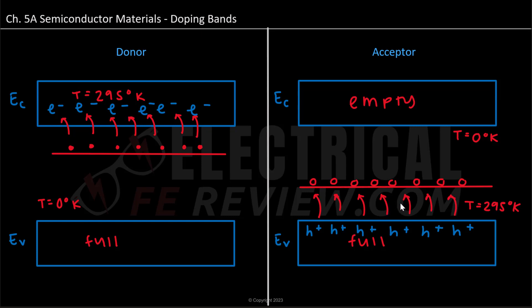And for acceptor bands, they are accepting the electrons. So whenever you accept something you have more of, which is addition. This concludes our video on doping bands. Thank you for watching.